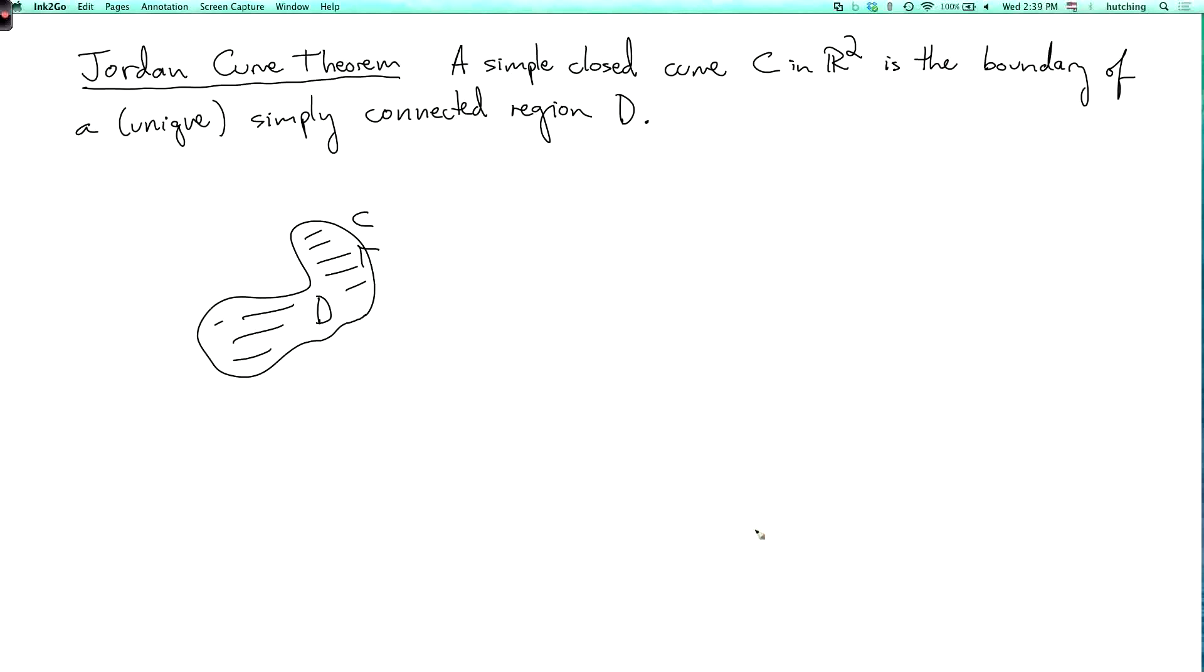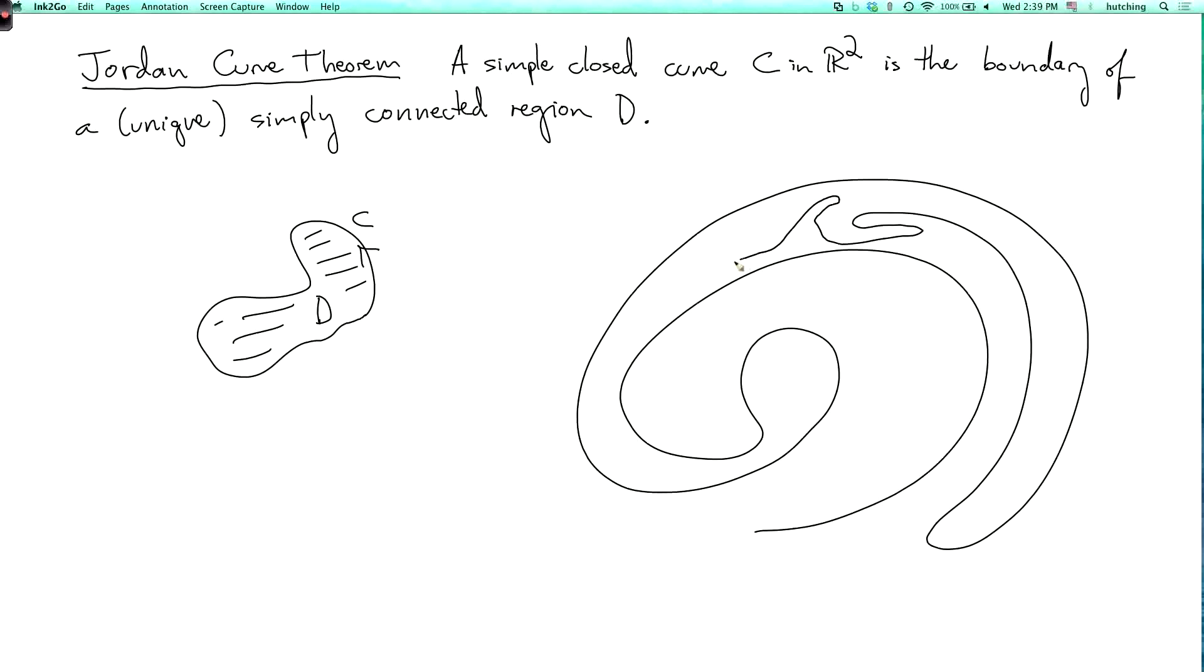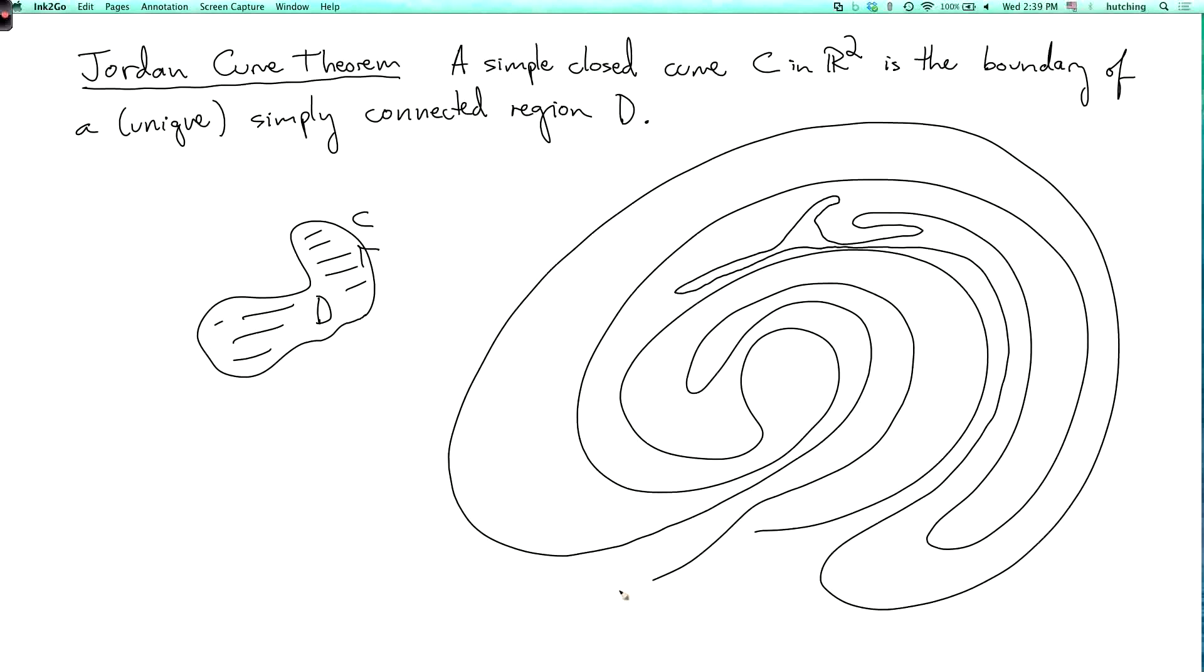It's not quite so obvious if you have some really complicated curve. I have to be careful not to cross myself here. How am I going to get out of here? I have to get out this way. Squeeze right through there. So there's a simple closed curve. What's the region D? And why is it simply connected? So this is maybe not so obvious.